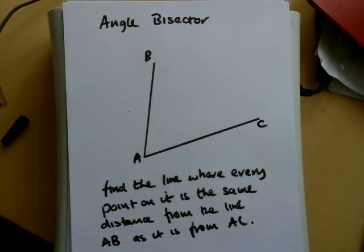In this video I'm going to show you how to draw an angle bisector. The angle bisector is a line where every point on it is the same distance from the line AB as it is from AC. So we'll construct the line and then we'll show you how it looks.